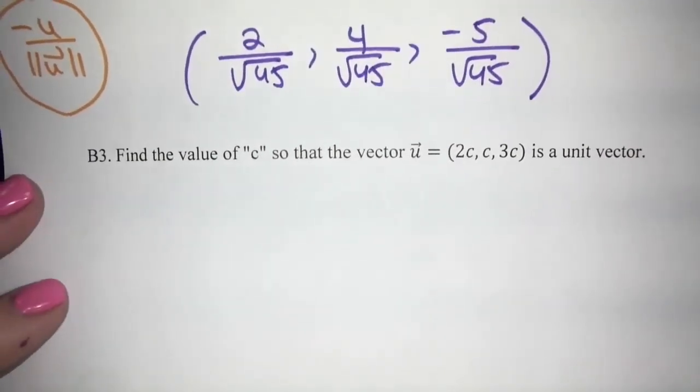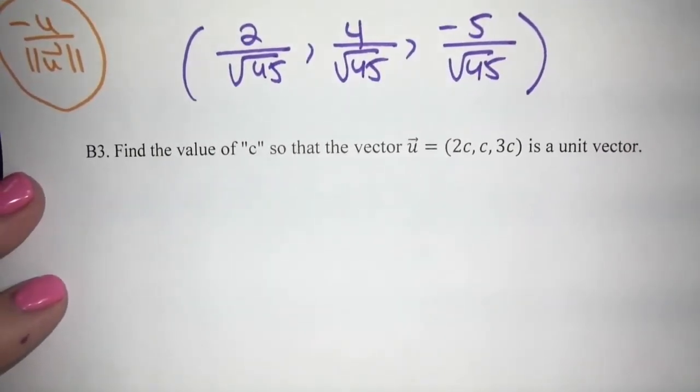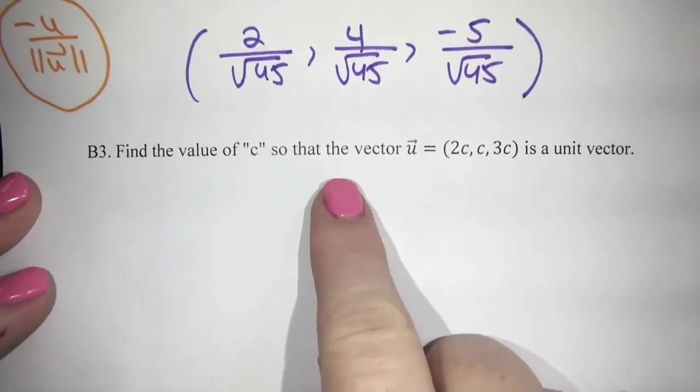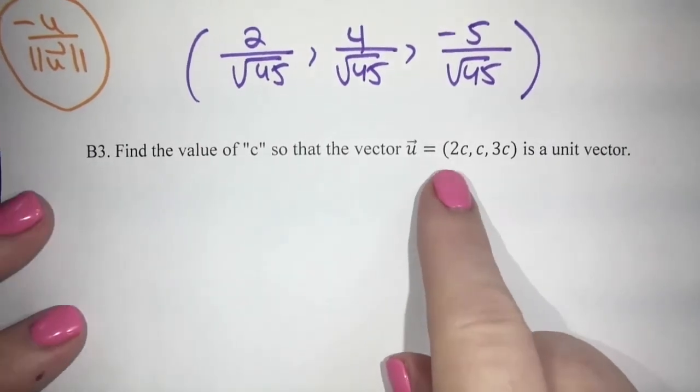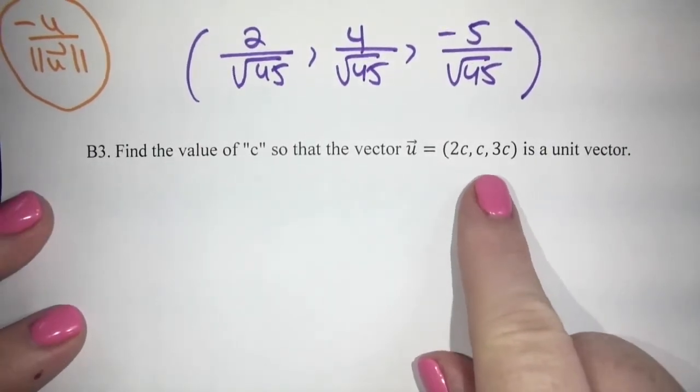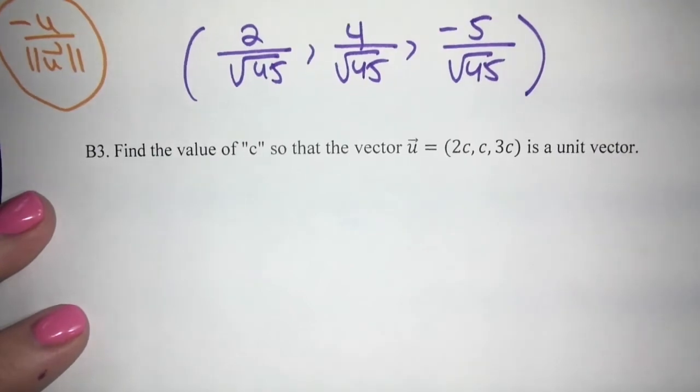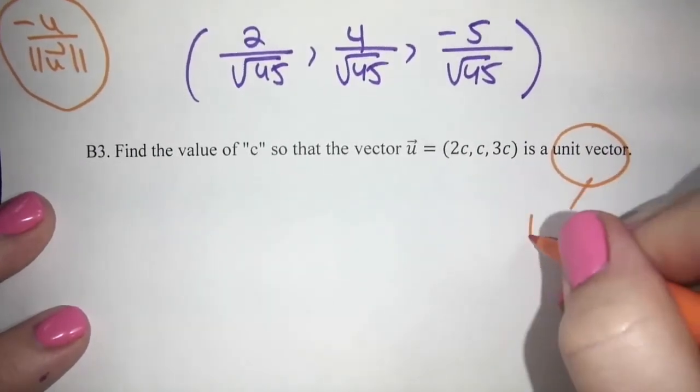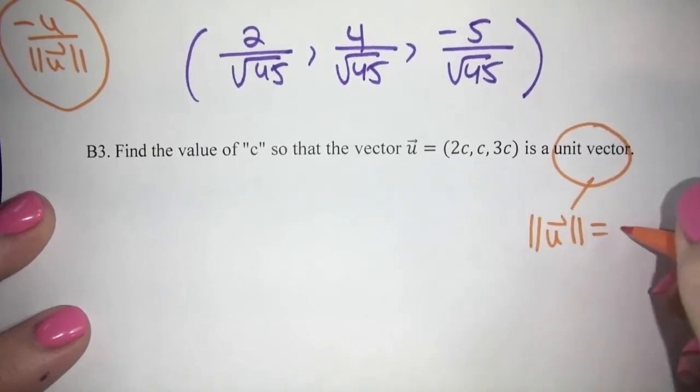Okay, another typical exam question is finding a value of C or K, or whichever letter they use on your particular exam. So find the value of C so that this vector, U equals (2C, C, 3C), is a unit vector. So the first thing I tell my students is, as soon as you say unit vector, think about what that means. That means that the magnitude of the vector is one.